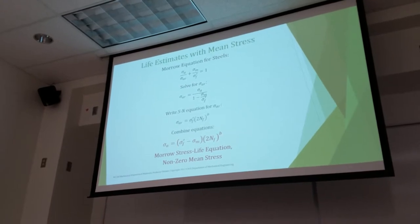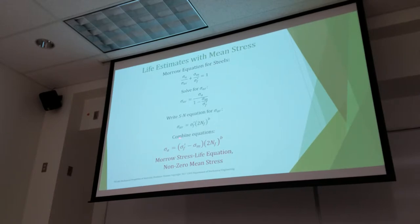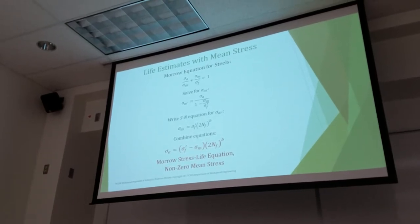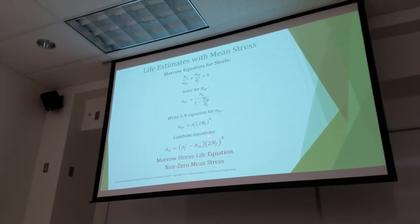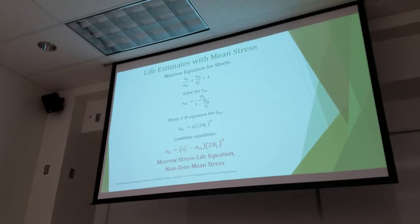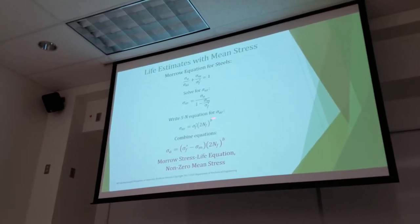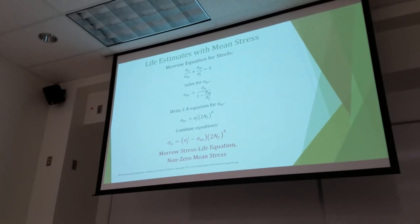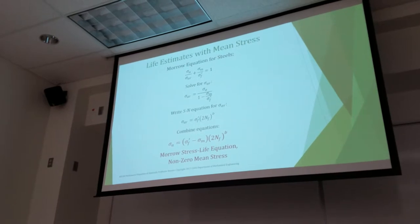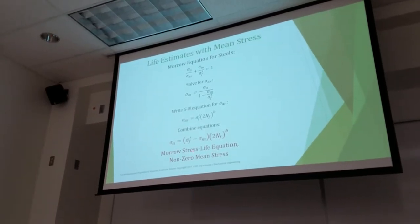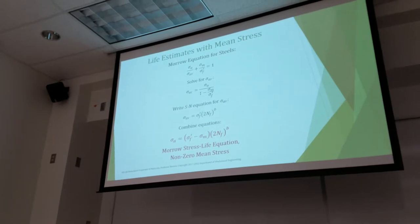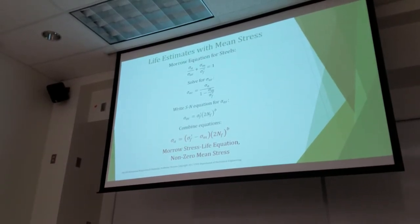In your homework, you should be using multiple equations and seeing how your safety factors compare between the different equations. What we can do is combine these design equations from our normalized amplitude-mean diagrams into our target stress life equation. Now we have one equation — Sigma AR equals Sigma_F prime times 2N_F to the B, substitute that in. And now, for the Morrow equation, we have a single equation where we don't have to go through the steps — it does it all in one step. So you can go directly with a Sigma A, Sigma M combination.